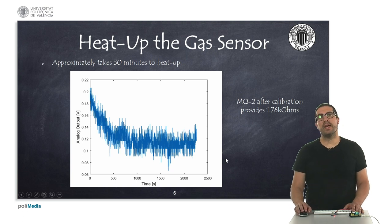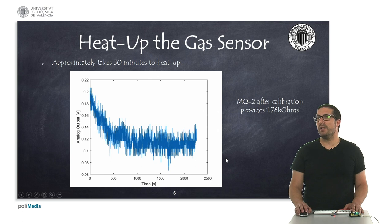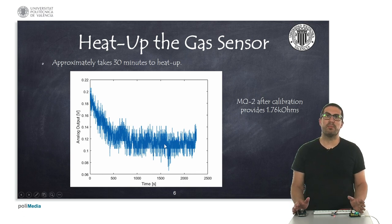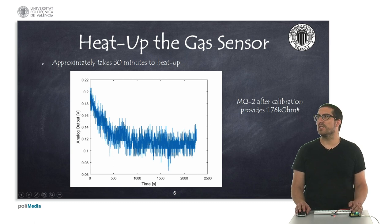This sensor, in order to work properly, needs a heat-up and here, I'm just simply plotting the analog value that I was measuring with the sensor and, as you can see here, it takes approximately 30 minutes to heat up, so at the beginning the value could be slightly higher and once it's warm, then it gets stable. This should be the corresponding procedure that we need to calibrate. After 30 minutes, then we can calibrate and measure the internal resistor R0, and in this case, after the calibration, for instance, I could get, for the MQ2 sensor, I could get that the internal resistor was 1.76 kilo ohms.